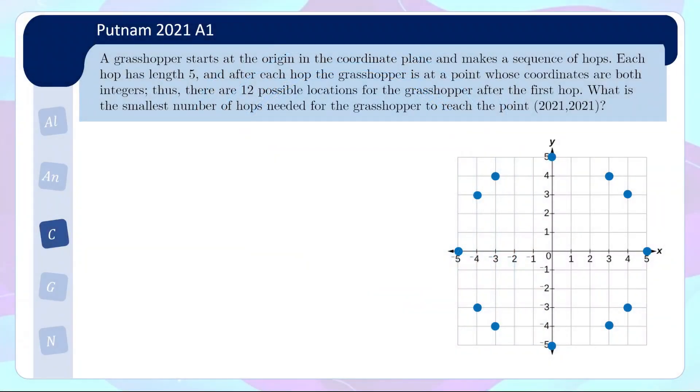Problem 1 is as follows. A grasshopper starts at the origin in the coordinate plane and makes a sequence of hops. Each hop has length 5 and after each hop, the grasshopper is at a point whose coordinates are both integers. So for example, from the origin, the grasshopper can go to (5,0) but can also go to (4,3) or (3,4). So in this case, there are 12 possible locations for the grasshopper after the first hop. What is the smallest number of hops needed for the grasshopper to reach the point (2021,2021)?